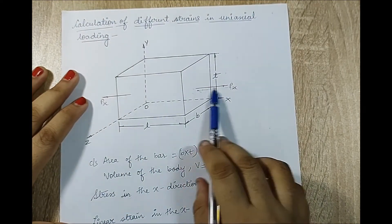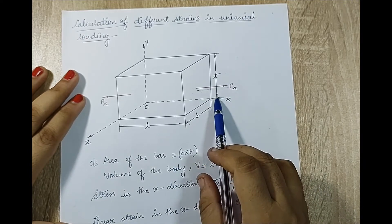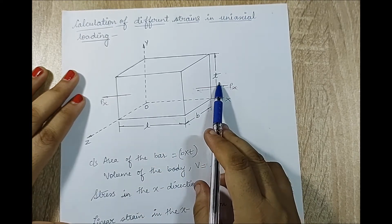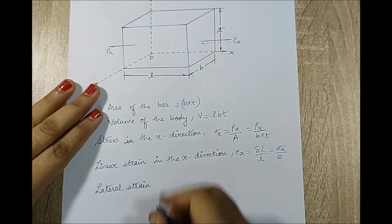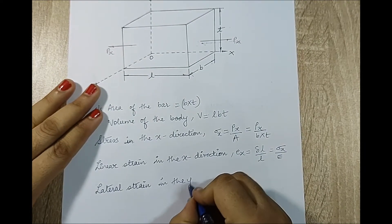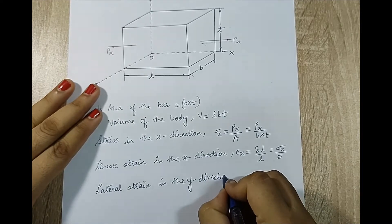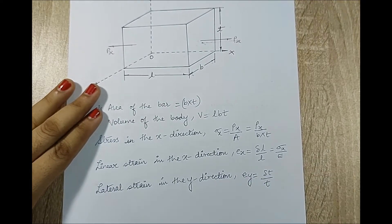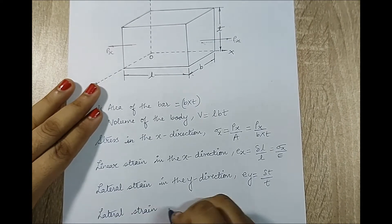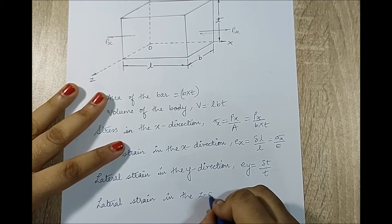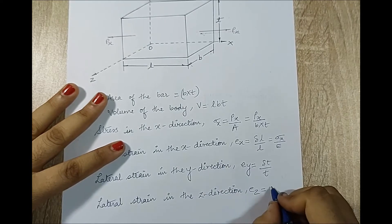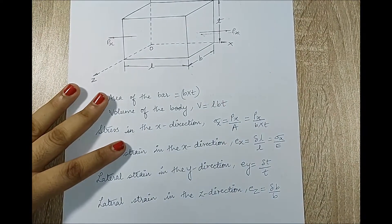As the length is going to increase — because this is a tensile load — B and T will reduce in dimension. Had this been a compressive load, length would decrease and B and T would compensate by increasing. So lateral strain in the y direction, Ey, will be δT/T, and lateral strain in the z direction, Ez, will be δB/B, since B is the dimension along the z-axis.